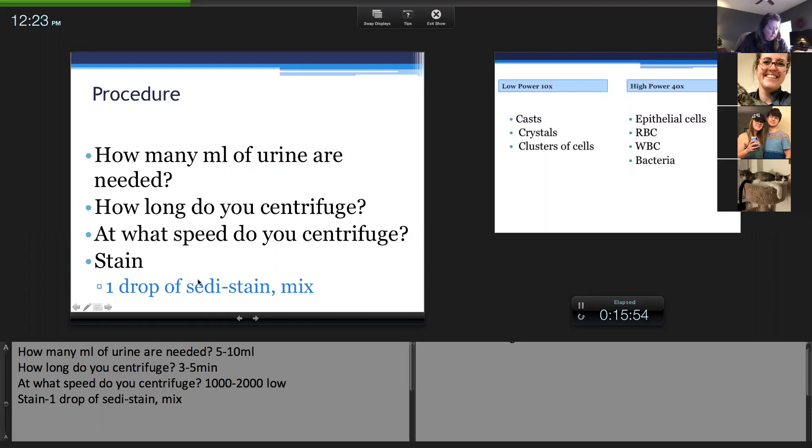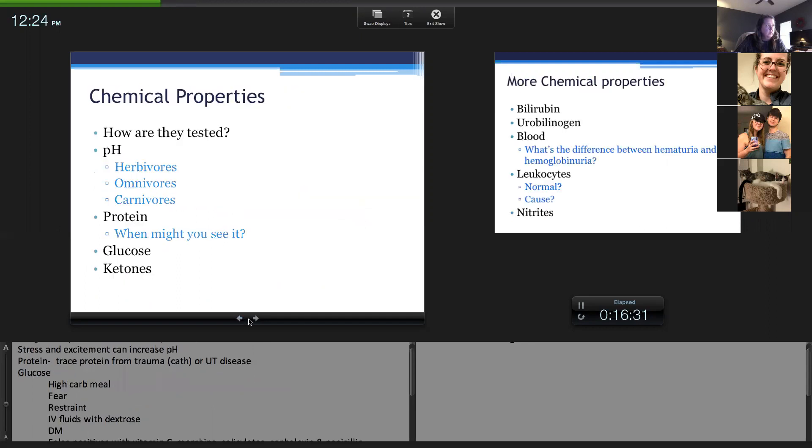I'll look at your pictures that you drew. Your struvites are the coffin lids. Your calcium oxalates are more of a square, not a rectangle, and have the X. Then you've got the oxalate which are a little bit longer, so the monohydrate versus the oxalate. Be familiar with the pictures of the crystals.